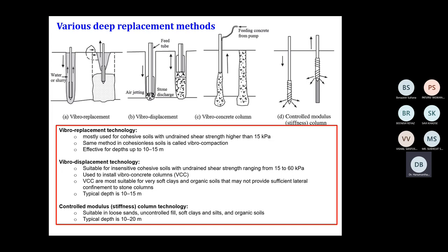Depending upon the properties of the soil — for example, the vibro replacement technology is mostly used for cohesive soils with undrained shear strength higher than 15 kilopascals — while vibro displacement technology is suitable for insensitive cohesive soils with undrained shear strength ranging from 15 to 60 kilopascals. Apart from that, there is also another constraint in the form of depth.